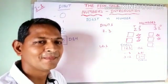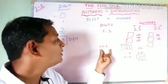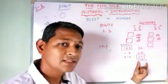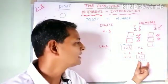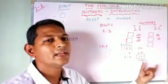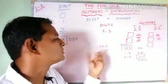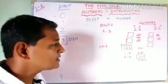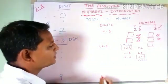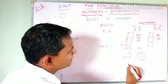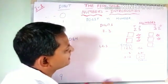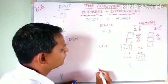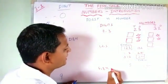In the same way, if you write the digits in descending order — the biggest first, then the next, then the next — you get the largest number that can be formed using the given digits. Now let us try this with a four-digit number.